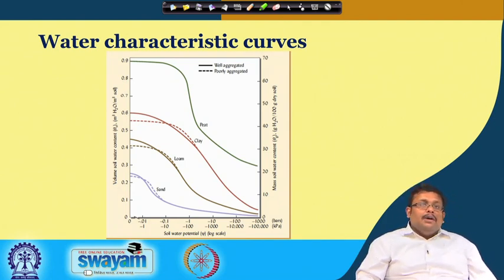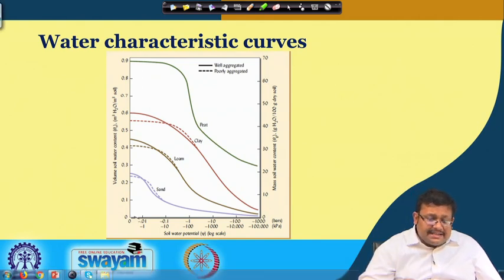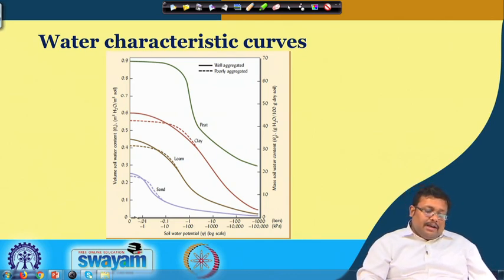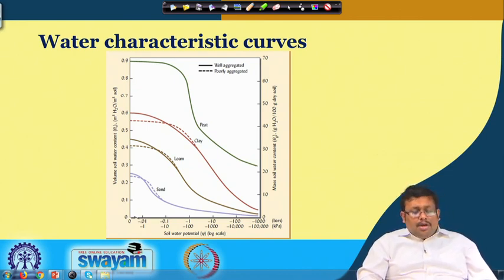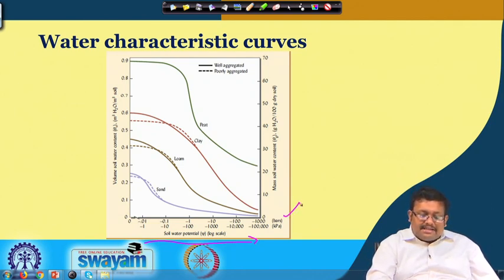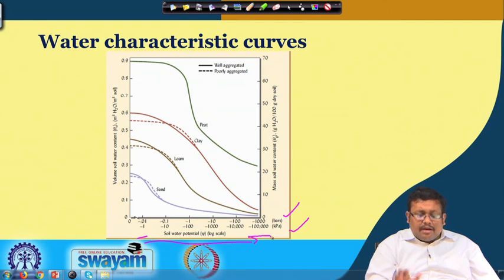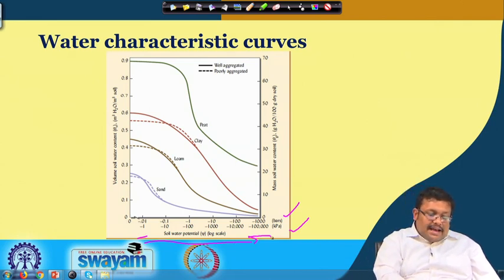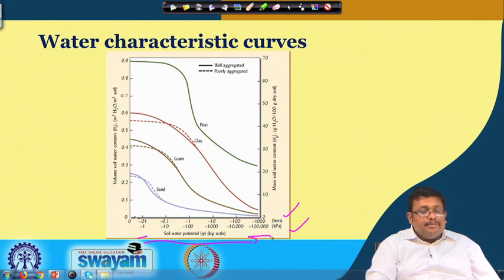This curve is very important — we call it the soil water characteristic curve. It shows the relationship between soil water potential and volumetric soil water content or gravimetric soil water content. In the x-axis we plot the soil water potential in log scale, both in bars and kilo Pascal. As we go from minus 1 kilo Pascal to minus 100,000 kilo Pascal, we are continuously drying the soil — similarly from minus 0.01 bar to minus 1000 bar.